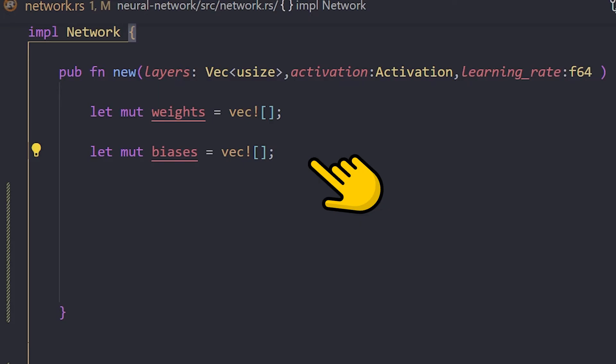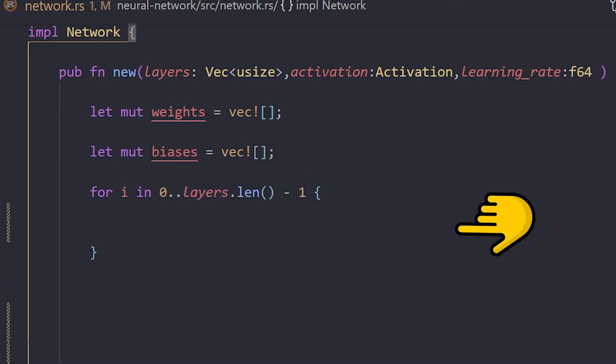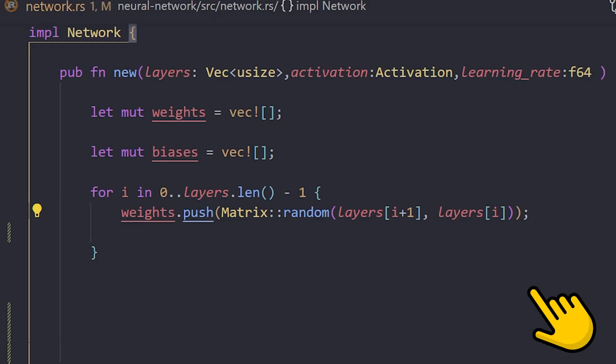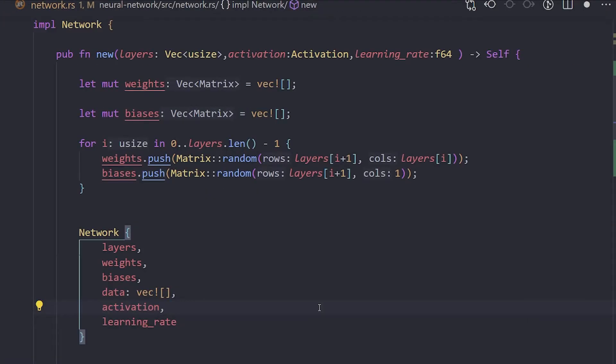Let's add a function to initialize our network. This is so that we can have a random network generated at the beginning and then fine-tune it to our needs. First, we create empty vectors to hold our weights and biases. Next, we iterate over all layers in our neural network. We utilize our random function to create matrices of the following dimensions, where the rows represent the amount of neurons in the next layer. Finally, we initialize our neural network.